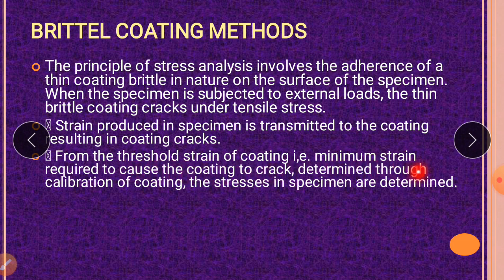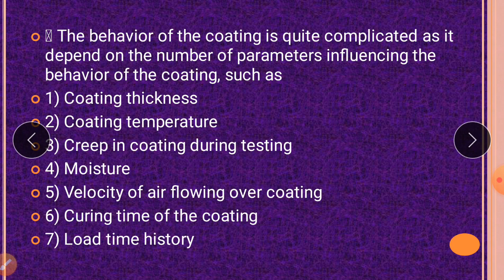The threshold strain of the coating is the minimum strain required to cause the coating to crack, determined through calibration. During calibration, for a particular amount of load the material is set to crack. Similarly, when applied to any material, it cracks at a certain threshold strain value. Since that strain is calibrated, you know the value, and by that you can determine the amount of stress developed in the material.